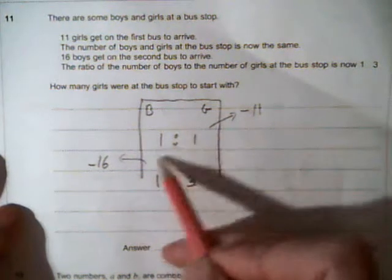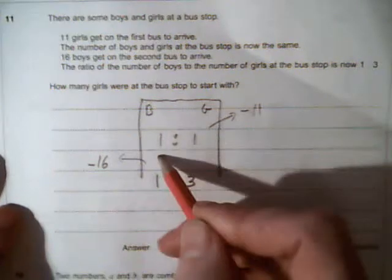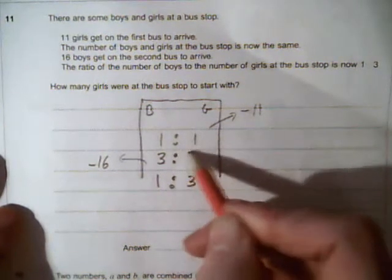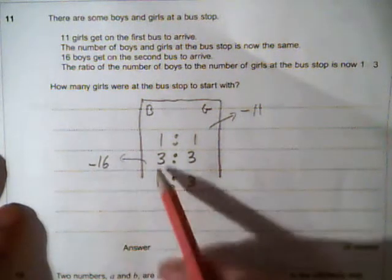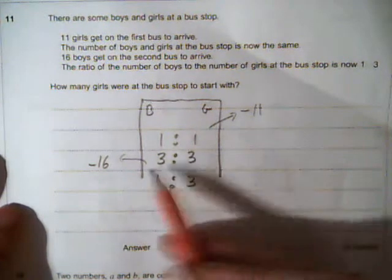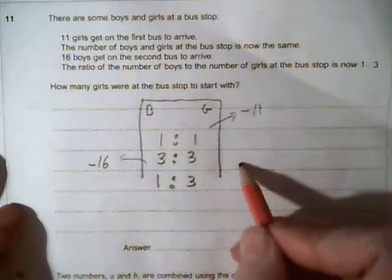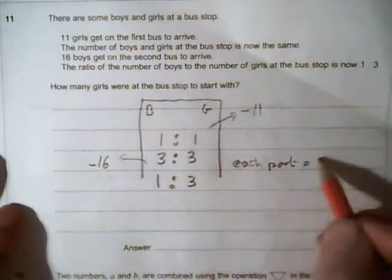OK, looking at the ratios, 1 to 3 at the end, 1 to 1 at the start. If we say the ratio 1 to 1 is the same as the ratio 3 to 3, that's the same equivalent ratio, then 16 boys must have been 2 parts, because we've lost 2 parts on the boys. So each part must be 8.